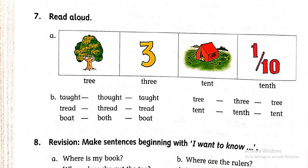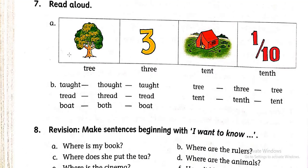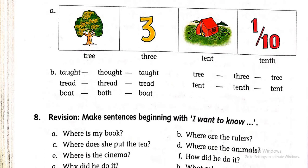Question number 7 is read aloud. You all can see a box in which 4 columns are there. Tree, three, tenth, tenth. So obviously, all are similar words in their sound.